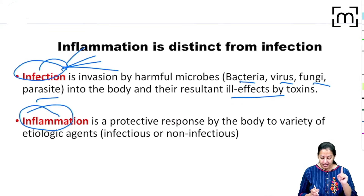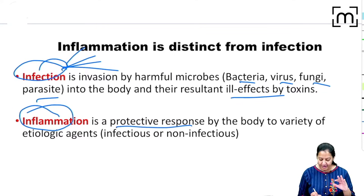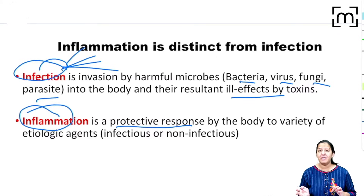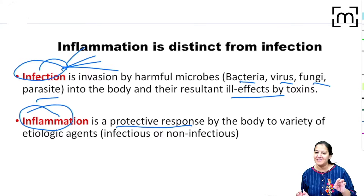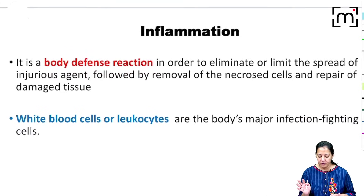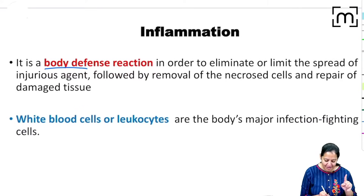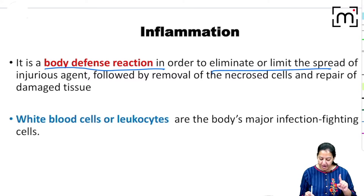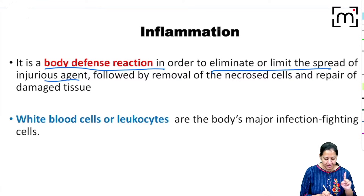In response to infection, the human body's protective response occurs with the help of WBCs — like an army that tries to prevent or limit the infectious organism. So inflammation is in response to infection. Infection is like a terrorist — a foreign element entering the human body — and inflammation is like the army trying to limit it. Inflammation is the body's defense reaction to eliminate or limit the spread of the injurious agent, which can be bacteria, virus, fungus, or parasite. The most important cells in inflammation are WBCs, that is leukocytes.